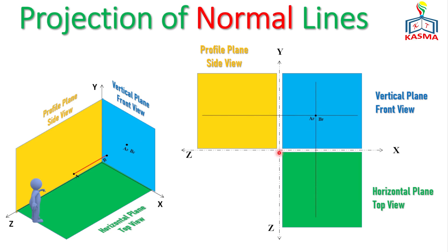The exact location of the front view will have an X component from here to here and a Y component from here to here. Both endpoints of the line are aligned at the same point — AF (point A front view) and BF (point B front view) coincide, making one point. The top view will be aligned on the horizontal plane and the side view on the profile plane.